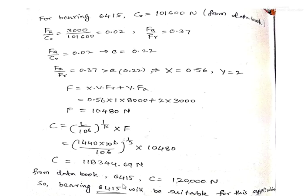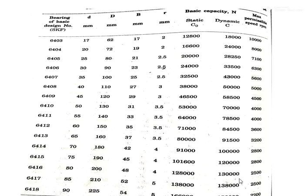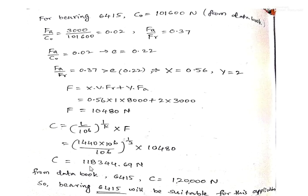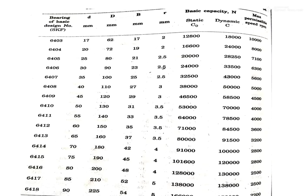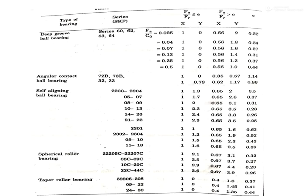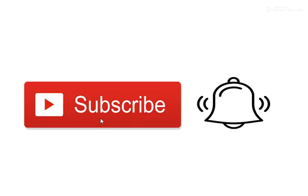From the data book, the dynamic capacity for the 6415 series is 1,20,000 N. Our required calculated C is 1,18,344.69 N, which is less than 1,20,000 N. Therefore, the 6415 series bearing is suitable for this application. For more videos, please subscribe and activate the bell symbol. Thank you.